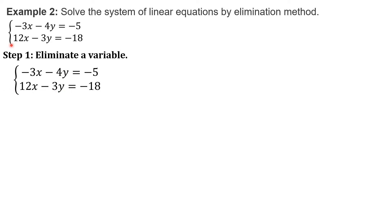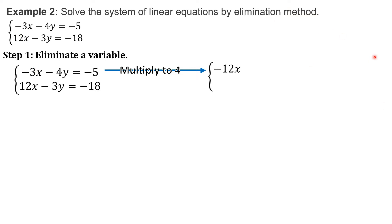None of the two variables has the same coefficient. So, before we can eliminate, we have to make them the same. You may decide whether to eliminate x or y, using multipliers. Think of a number to multiply to make them the same. Since I want to eliminate x, my goal is to make negative 3x the same as 12x. I have to multiply the whole equation 1 by positive 4 — each term: negative 3x, negative 4y, and negative 5. So, negative 3x times 4 gives negative 12x, negative 4y times 4 gives negative 16y, and negative 5 times 4 gives negative 20.